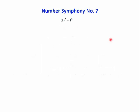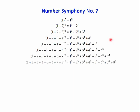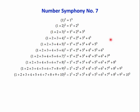Symphony number seven, we've got one squared equals one cubed. One plus two squared is one cubed plus two cubed. One plus two plus three squared is one cubed plus two cubed plus three cubed. So another nice pattern using squares and cubes. I got these from this website, Kevin Carmody's website, and there are some other symphonies and things there as well. It's a really nice website.